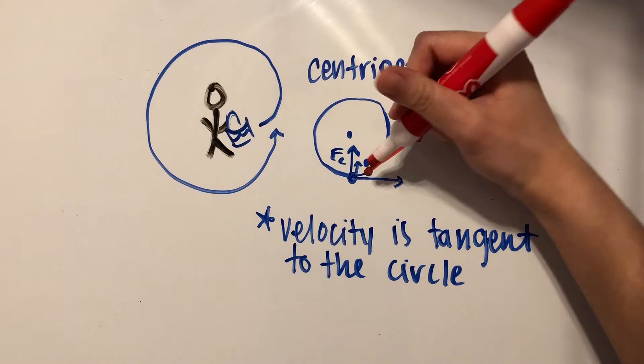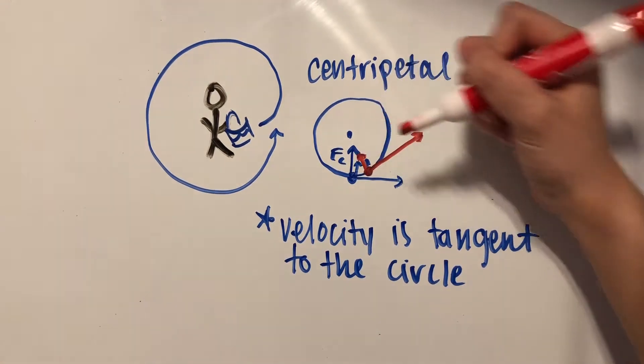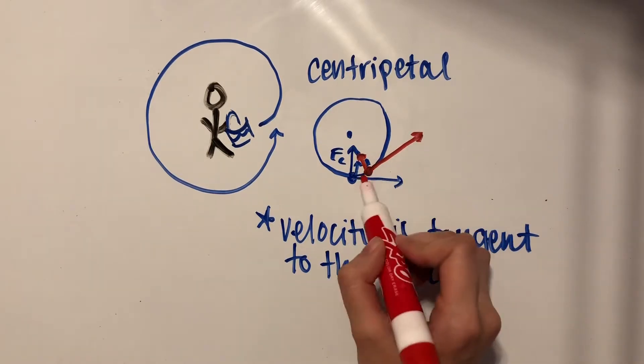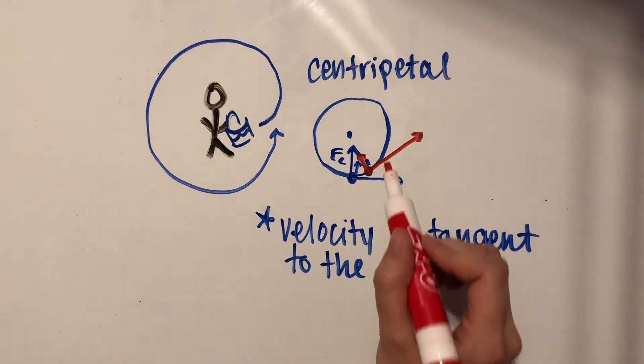Now the acceleration is going to be pointing to the middle again of the circle. You can see that the acceleration and the velocity vectors are going to be perpendicular to each other.